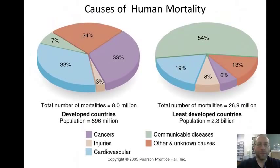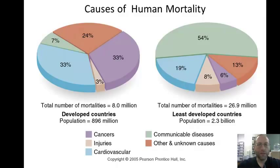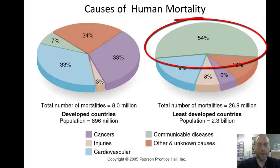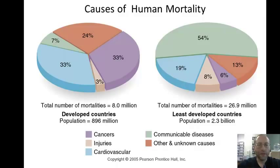Here is one reason. Here are the causes of human mortality where we look at developed countries and also the least developed countries. In developed countries, only seven percent of people die from communicable diseases — diseases that can be spread from person to person. While in the least developed countries, that number is fifty-four percent. So here in the United States the disease burden is not representative, while in the least developed countries it is. Most of the people who die of disease will be in the least developed countries.